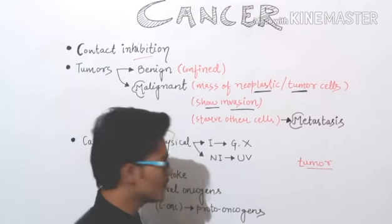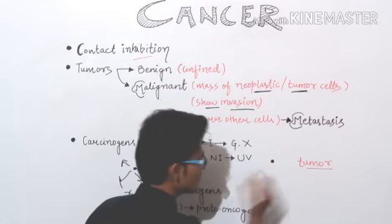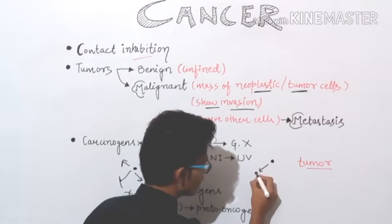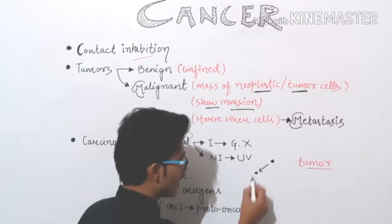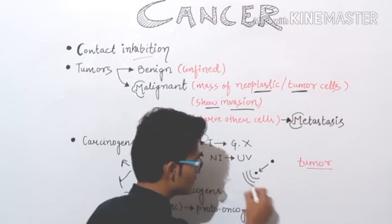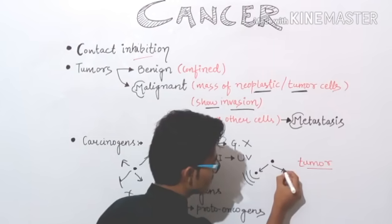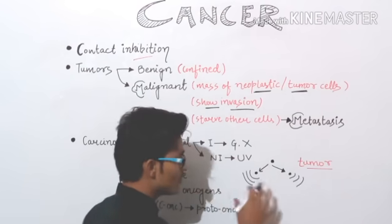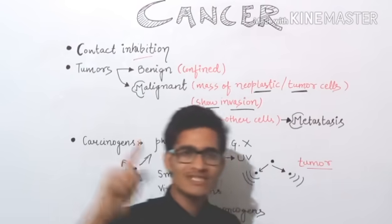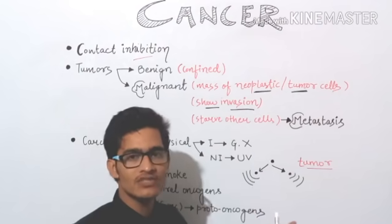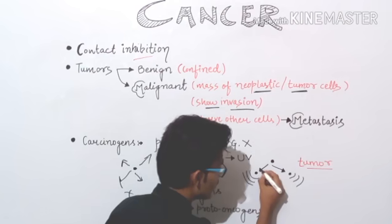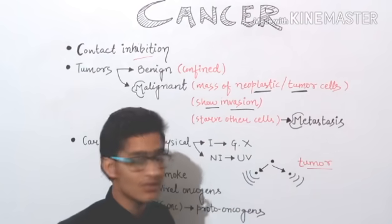For example, a malignant tumor reaches a particular organ such as the stomach — it will start dividing in the stomach. Another part may go to the liver, and it will start dividing in the liver. So wherever it goes, it will start dividing in that place. This is known as invasion — going to different kinds of places and proliferating there.